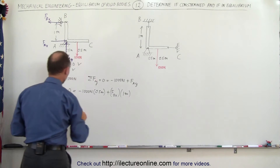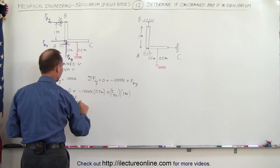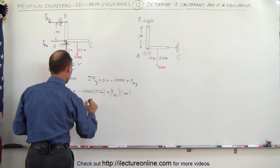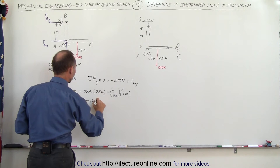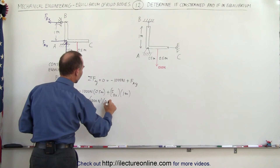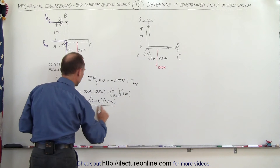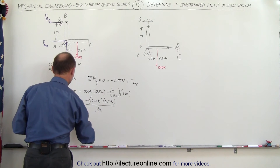From here, F sub B in the x direction equals 1000 newtons times 0.5 meters divided by 1 meter. The meters cancel out, so F sub B in the x direction equals 500 newtons in magnitude.